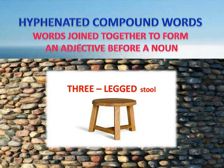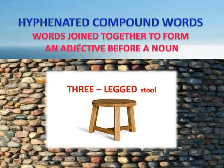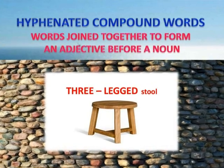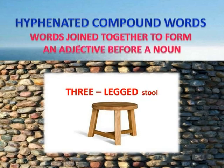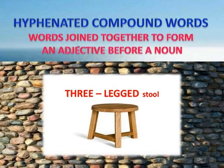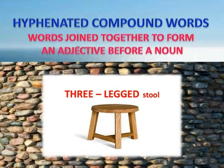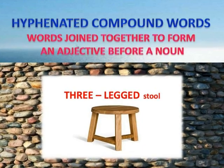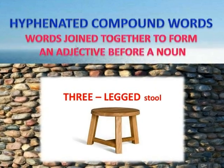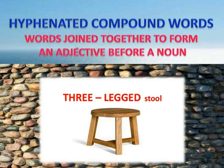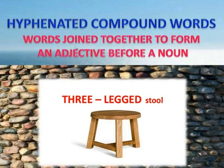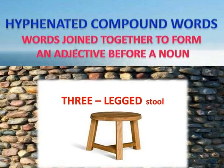Hyphenated compound words are most commonly used when the words being joined together are combined to form an adjective before a noun. For example, 'three-legged' is a hyphenated compound word combined to form an adjective before a noun — 'stool' — referring to a piece of furniture having three legs, that is 'mukkali' in Tamil.